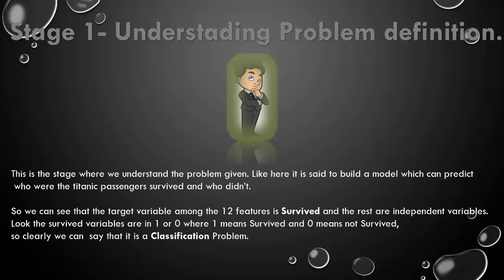Stage 1: Understanding the problem definition. This is the stage where we understand the problem given. Like here, it is said to build a model which can predict who were the Titanic passengers that survived and who didn't. So we can see that the target variable among the 12 features is survived and the rest are independent variables. Look, the survived variables are in 1 or 0, where 1 means survived and 0 means not survived. So clearly we can say that it is a classification problem.